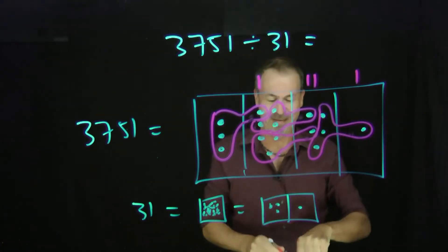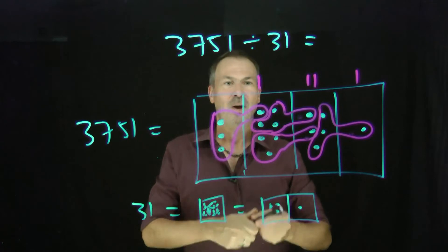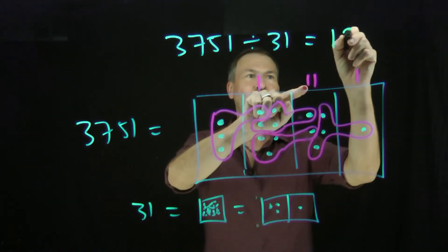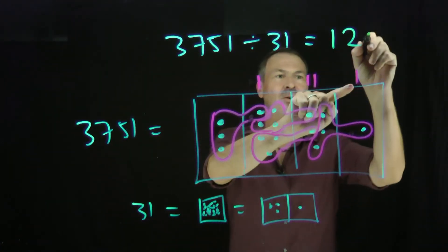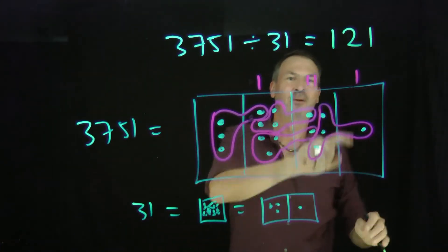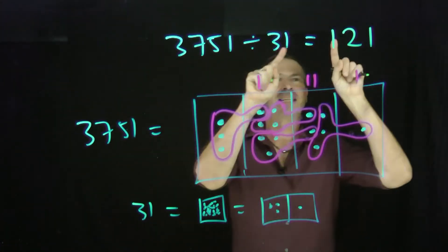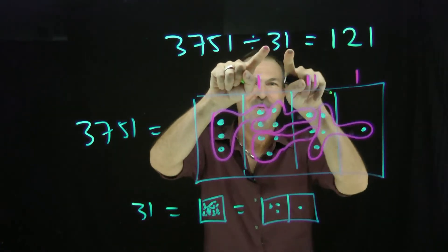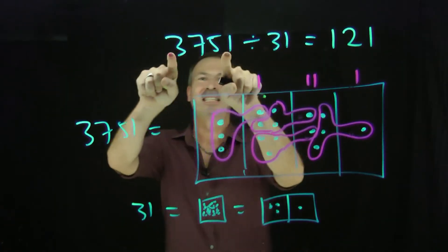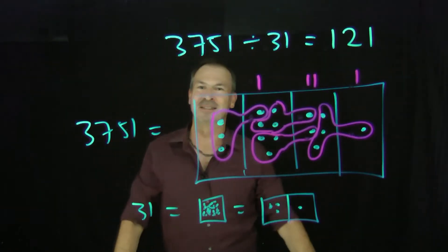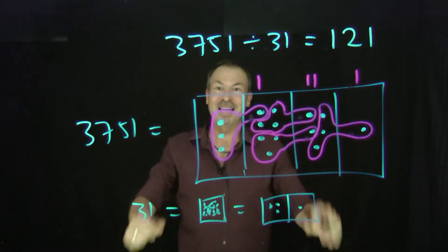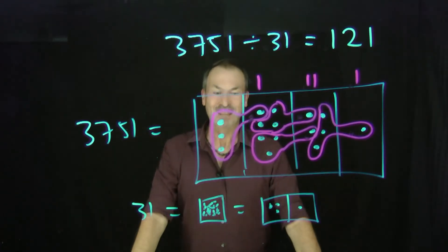And look at that — I see we have one at the hundreds level, two at the tens level, one at the ones level. Yes, 121 when 31-ified — times 31 — must give the answer 3,751. That's what I wanted and there it is. I'm seeing it. This is fun.